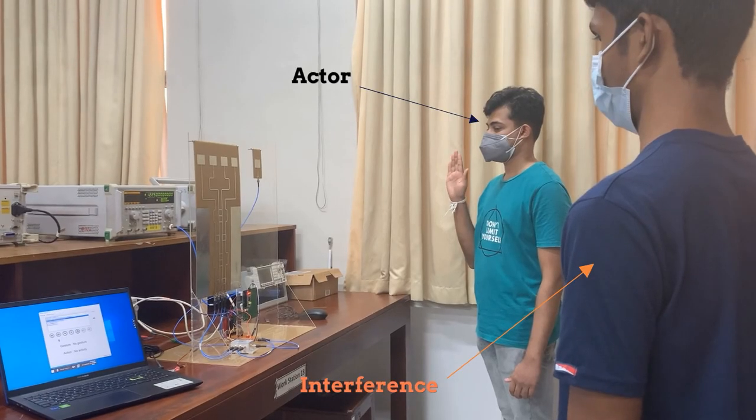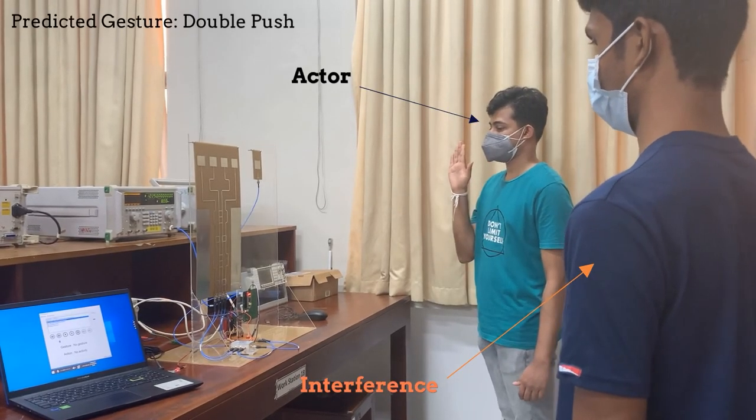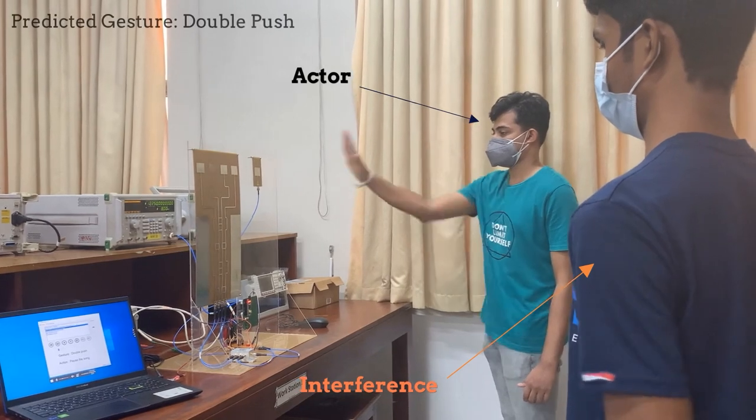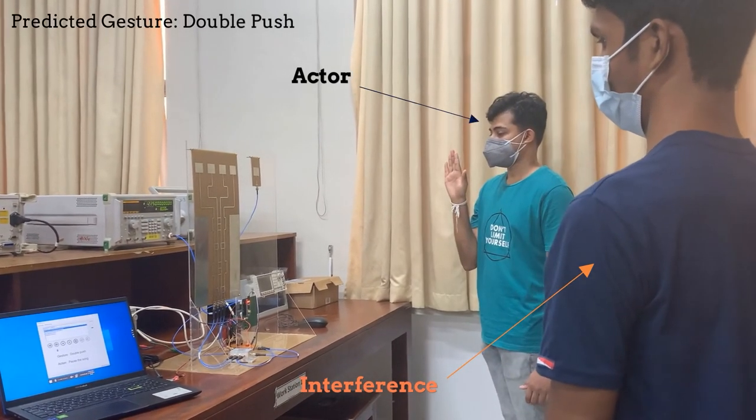Our system is even capable of predicting the gestures in a desired direction. This is achieved by changing the beam selection from the multiplexer.